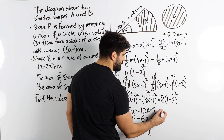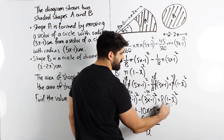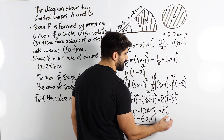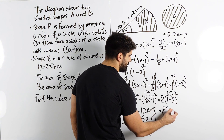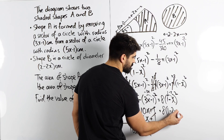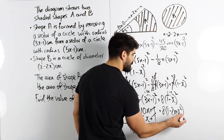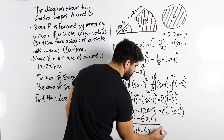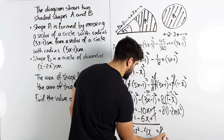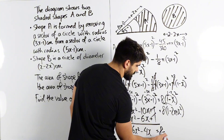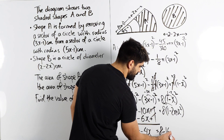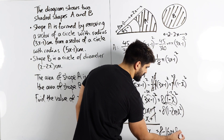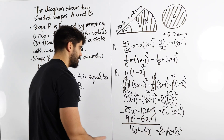On the right-hand side we have 8 lots of (1 minus x) squared. Expanding: square the first number gives 1. Multiplying the terms: 1 times minus x is minus x, doubled gives minus 2x. Then square the last term: x squared. Multiplying out by 8 gives: 8 minus 16x plus 8x squared.